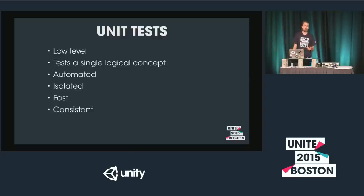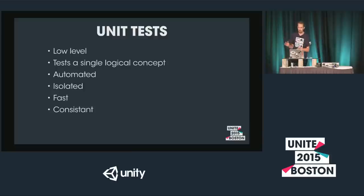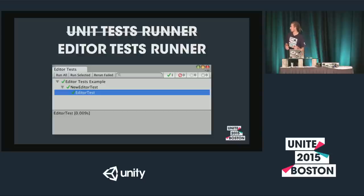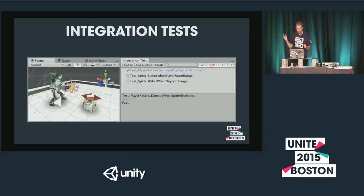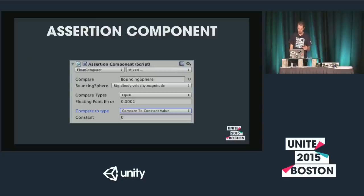Unit tests must also be consistent — giving the same results on every platform — and cannot depend on external resources like network or disk operations, because that would slow them down and cause false failures when external connections break. That's why we call them editor tests: you run them in the editor, not in play mode. Integration tests, by contrast, run in play mode and are used to test assets or scripts that depend on time.